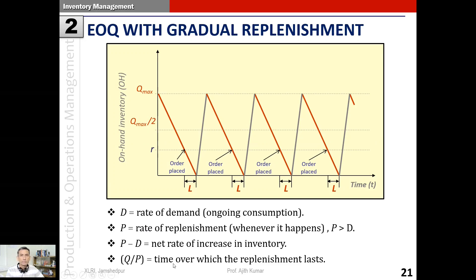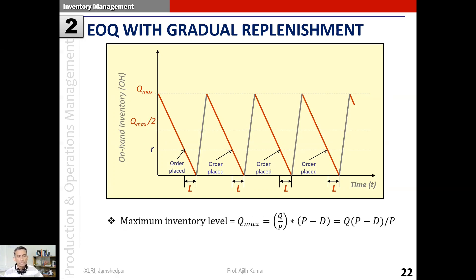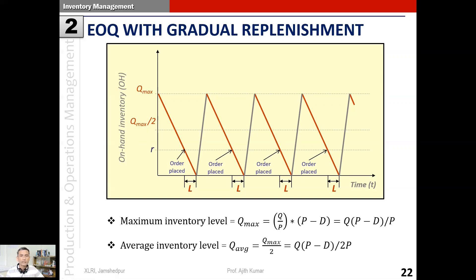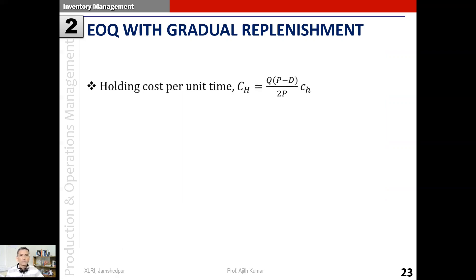q divided by p is the time over which replenishment lasts, because q is the ordered quantity and p is the rate of replenishment. Therefore the maximum inventory level q_max that is reached will be (q/p) multiplied by (p minus d), which is the net rate of increase of the inventory. This simplifies to q times (p minus d) divided by p. The average inventory level is half of that maximum level - q_max divided by 2, which is q(p minus d) divided by 2p.